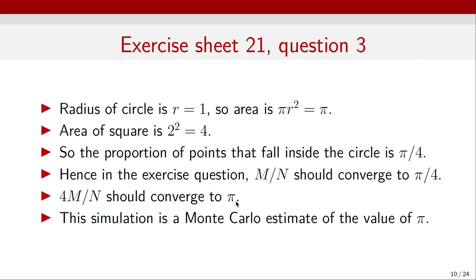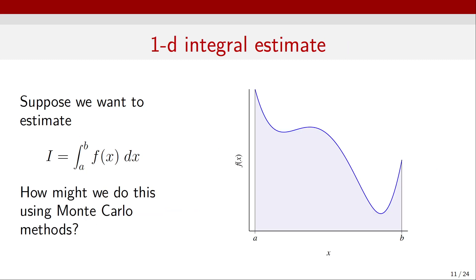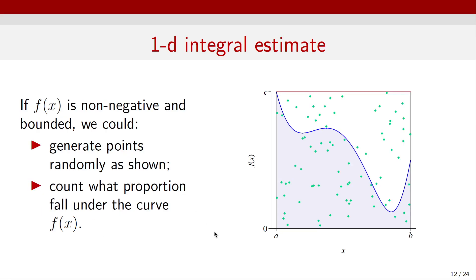This simulation is a Monte Carlo estimate of the value of pi. More generally, suppose we want to calculate a one-dimensional integral of f of x from a to b using Monte Carlo methods. Let's suppose that f of x is non-negative and bounded; then we could generate points randomly and count what proportion of those points fall under the curve f of x.